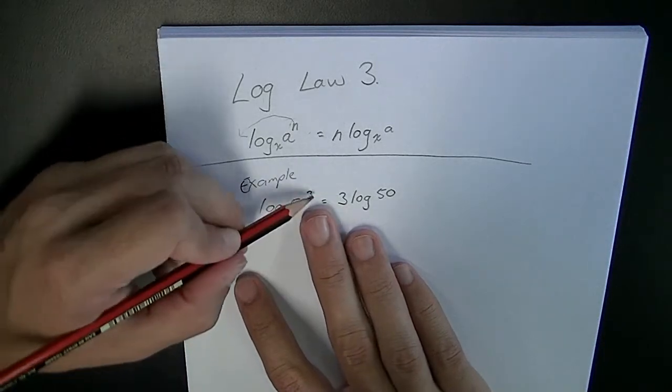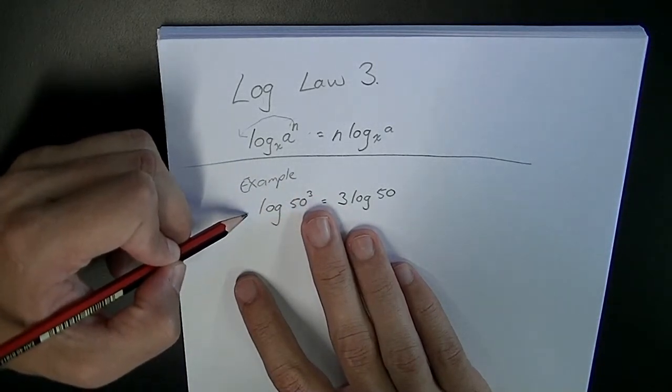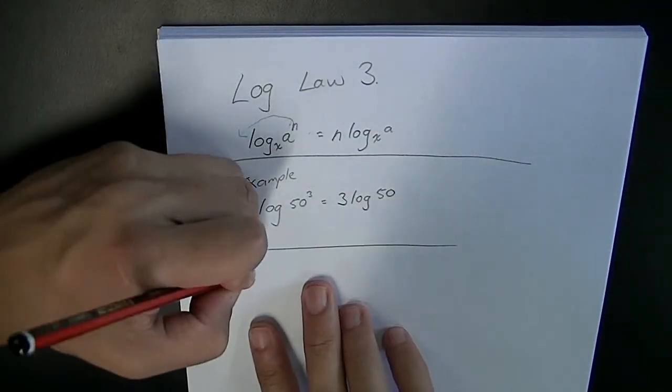Now this is going to be really useful, being able to get rid of an index and bring it out here and turn it into multiplication. Now, in the same way, you can obviously reverse this process.